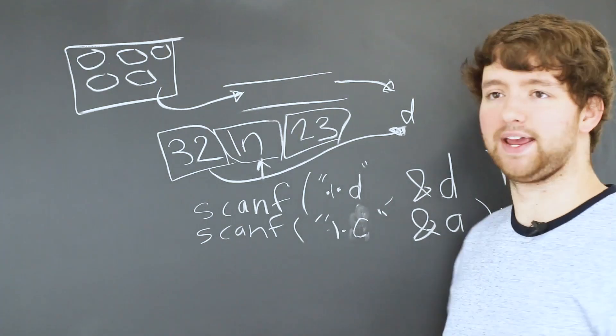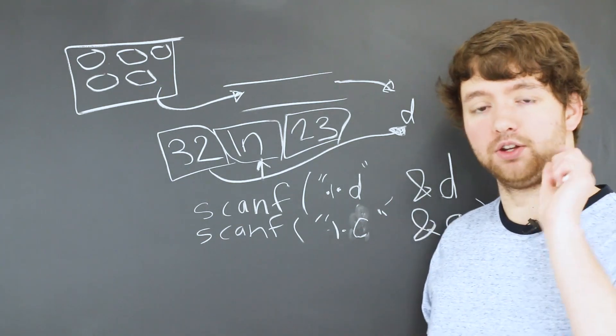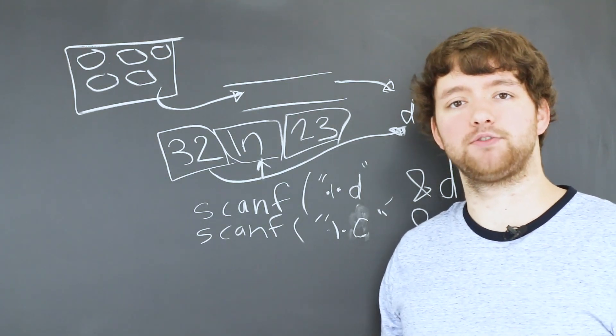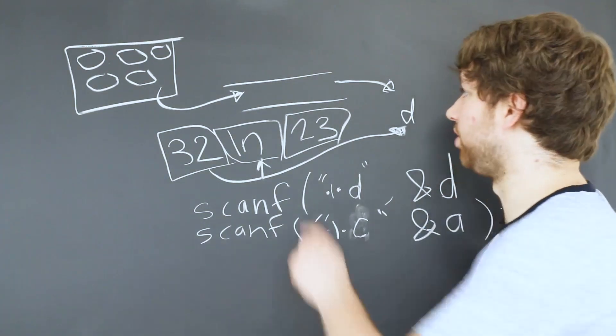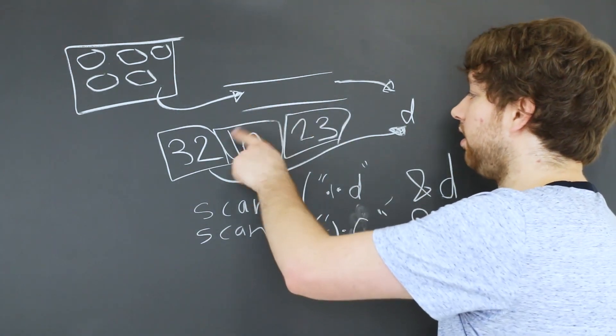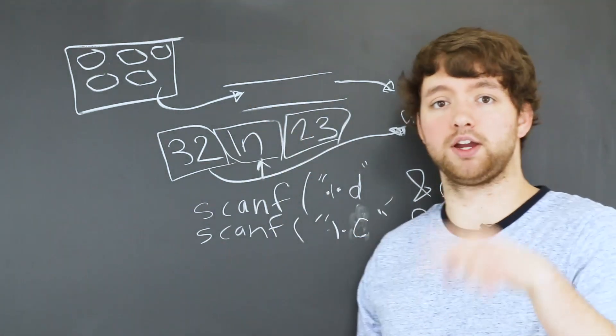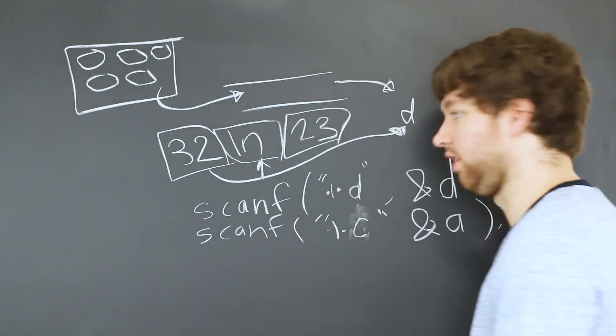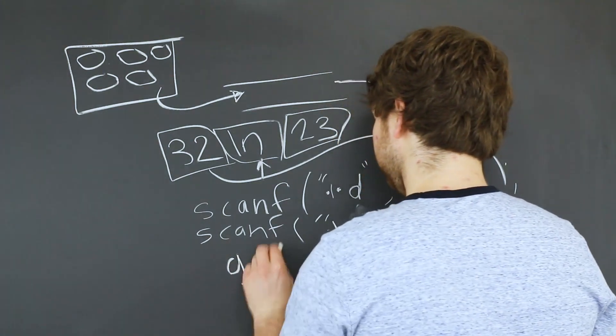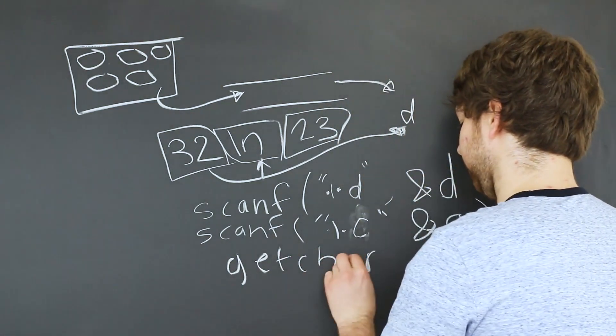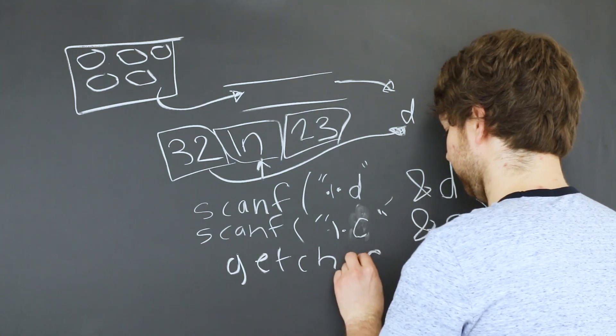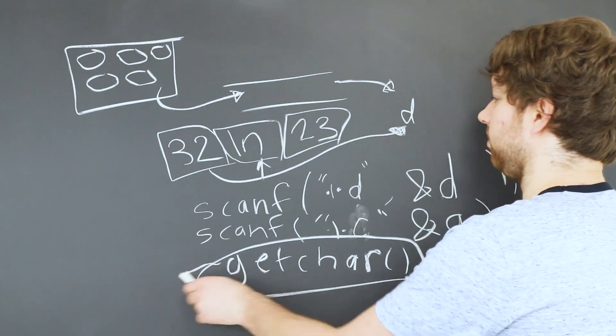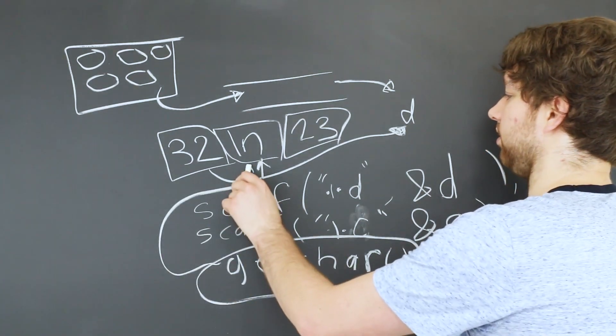So what you need to understand is that when you are using scanf multiple times in your program, sometimes you have to flush the input stream and basically get rid of any newline characters. And you can do that with a function called getchar or getcar.